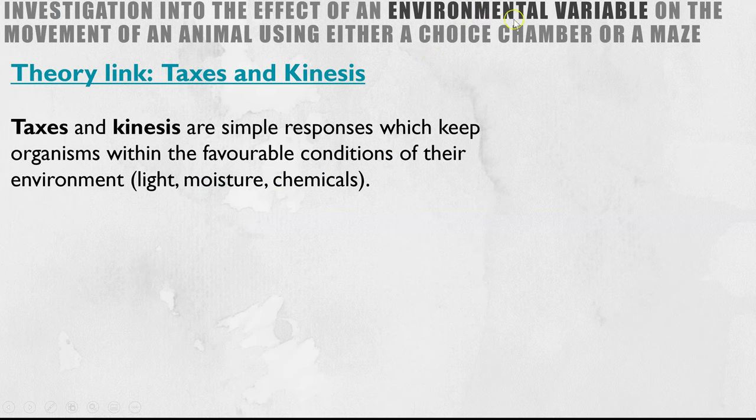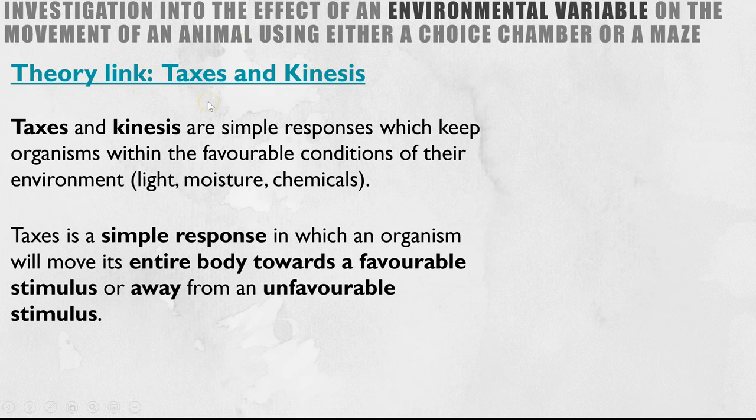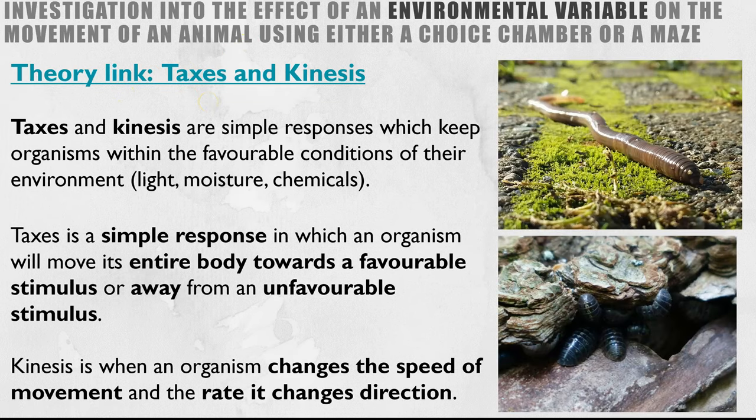The environmental variable causing effects on an animal's movement is linking to taxis and kinesis. I've already covered this in an earlier video so I'll link that up here. The key thing you need to know is that they're both very simple responses which animals have as a way to move into more favorable conditions. Taxis is when the organism moves its entire body towards a favorable condition or away from an unfavorable, whereas kinesis is when an organism changes the speed of movement and the rate it changes direction.